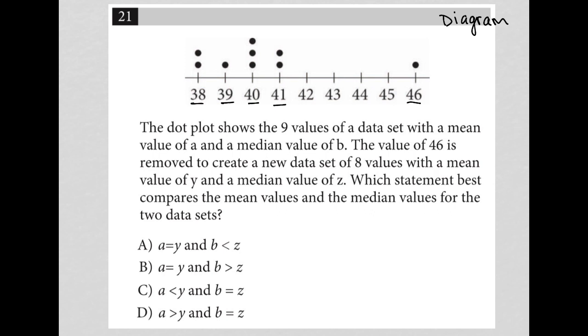Each dot represents a data point. The question says the dot plot shows nine values with a mean value of A and a median value of B. So A is the mean, B is the median.